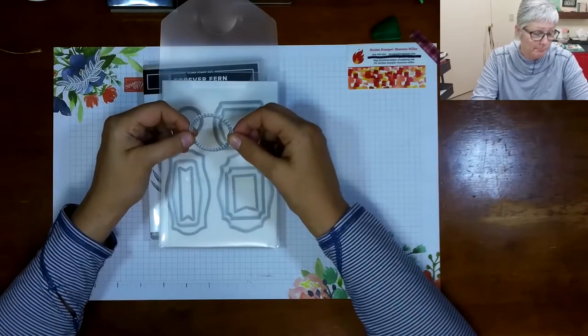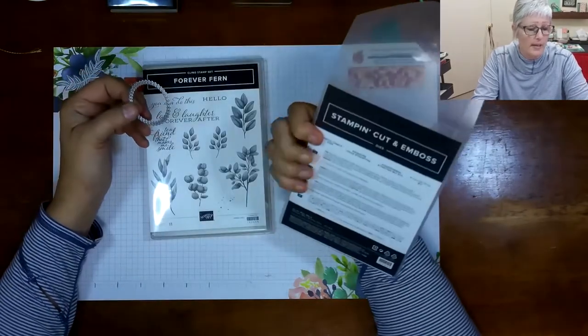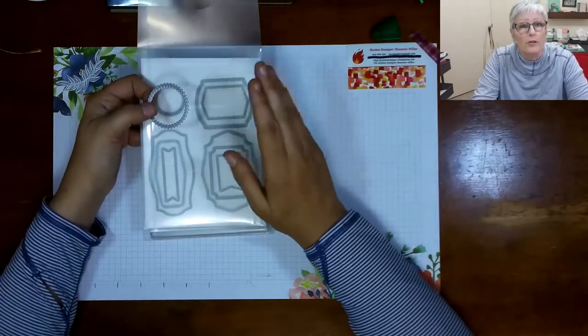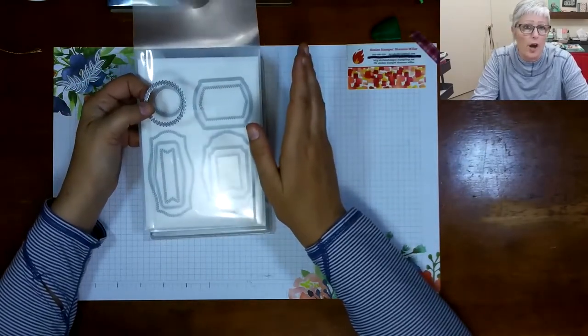Now for this project today I'm also pulling in some of our new dies. This little scallop specially stitched circle is from the Tasteful Labels dies.